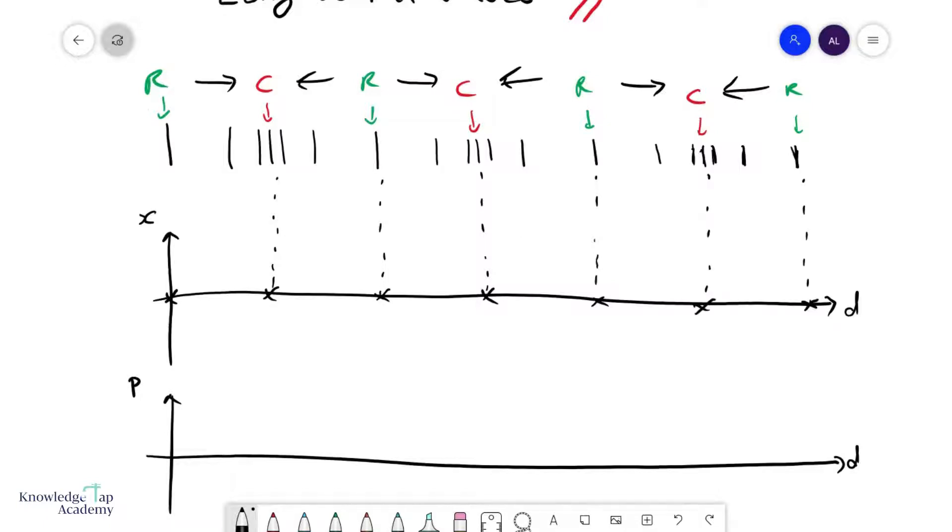If we take rightwards as positive, then it means all the guys over here must be displaced in the positive direction. So we go like this and we can join up the wave very nicely like so, and we have a very nice transverse representation of this wave.